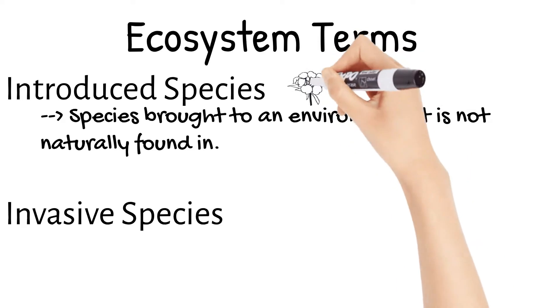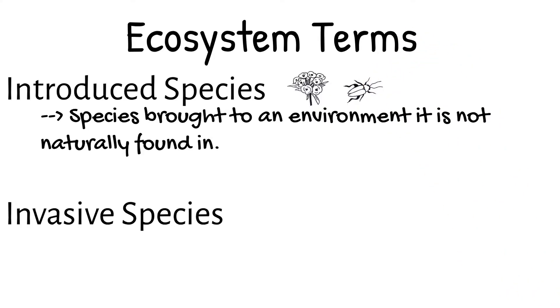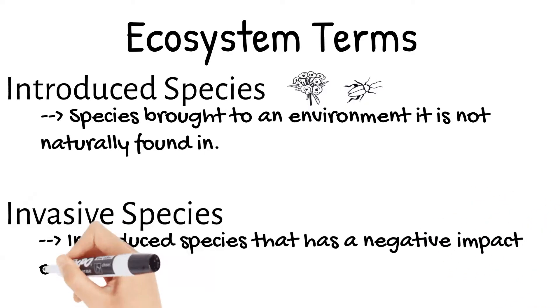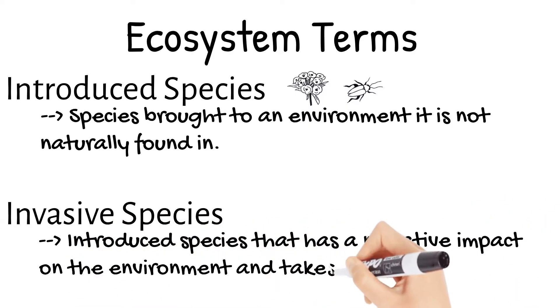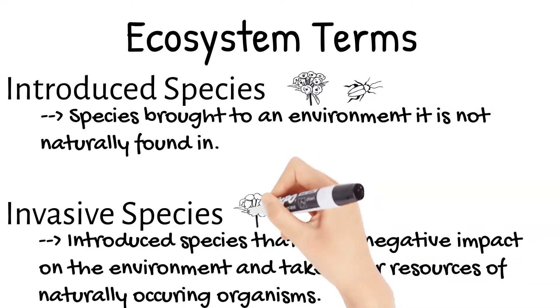The leafy spurge and black dot spurge beetle were introduced species to Alberta. The leafy spurge accidentally and the beetle on purpose. An invasive species is one that was introduced but has a negative impact on the environment and takes over resources of naturally occurring organisms. The leafy spurge in this example.